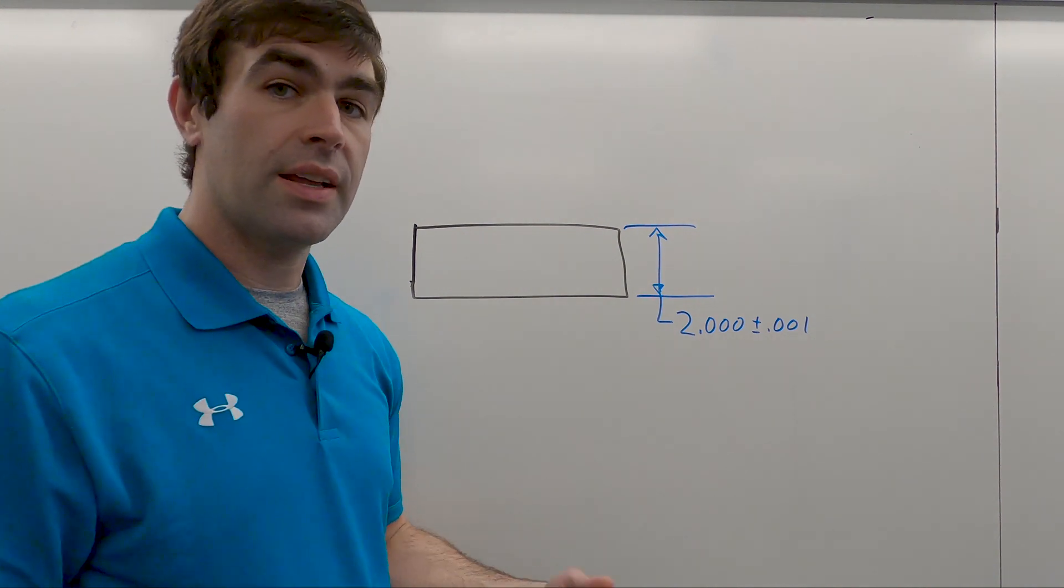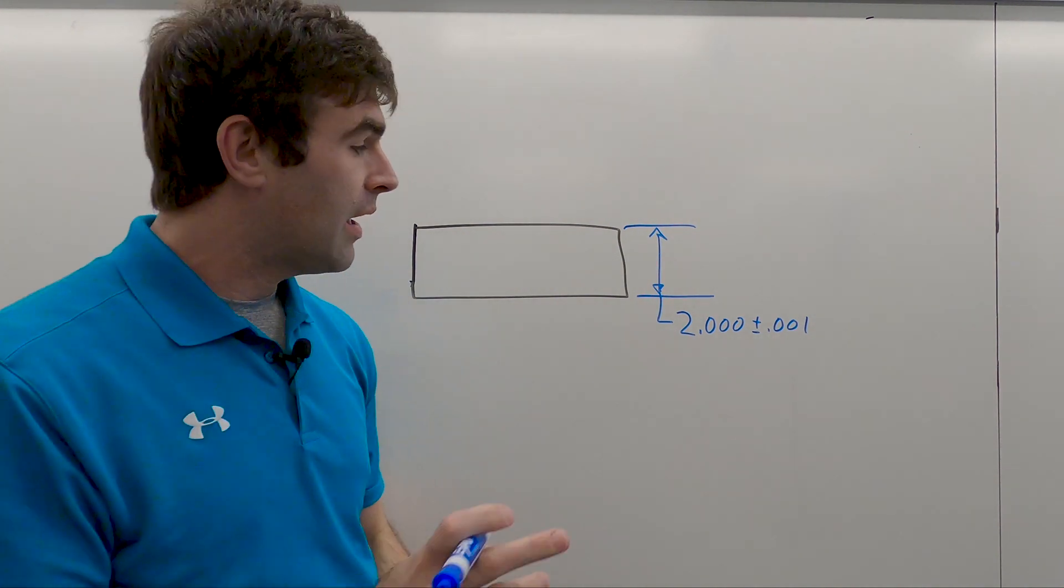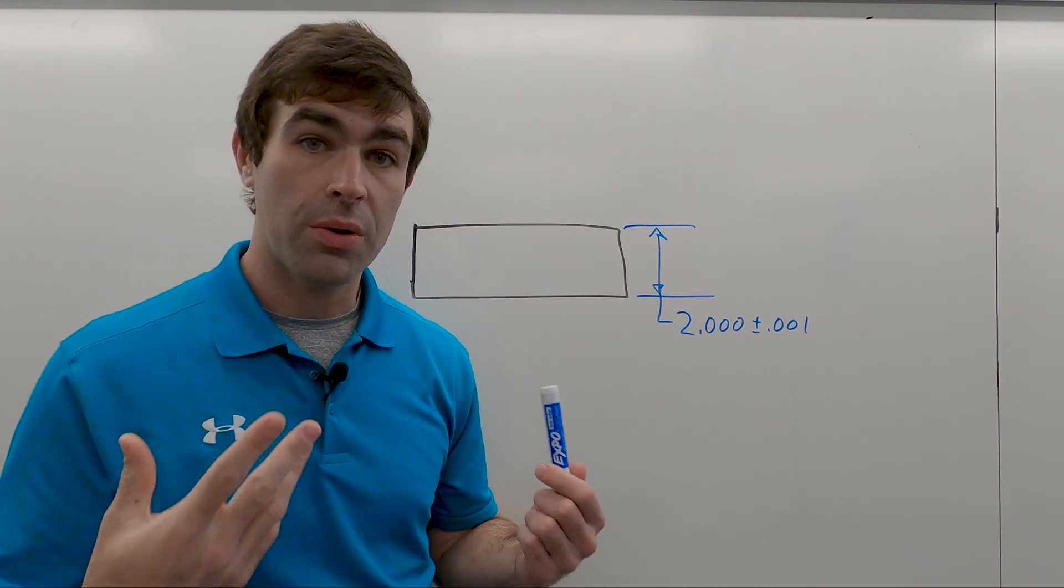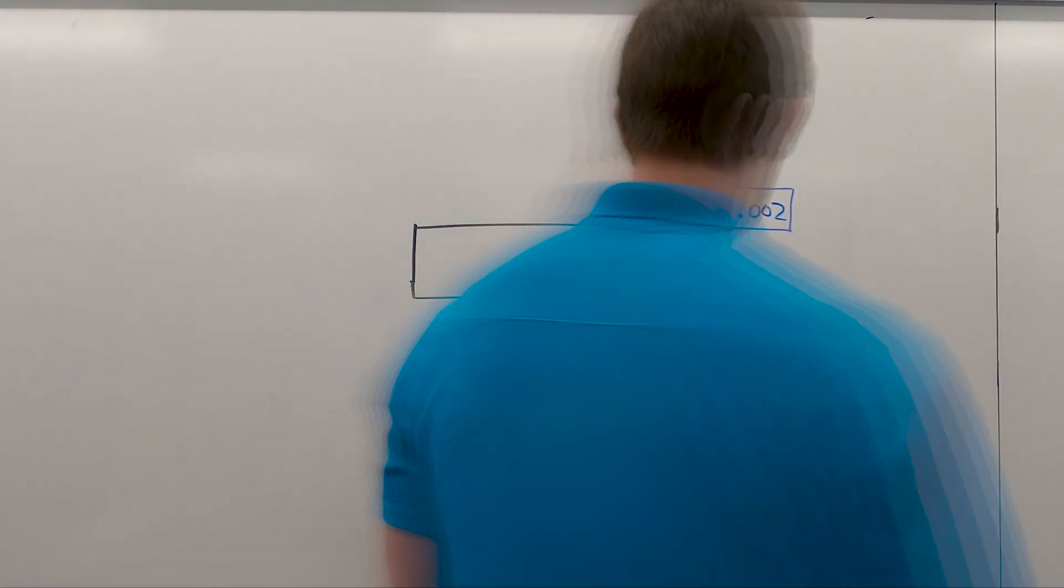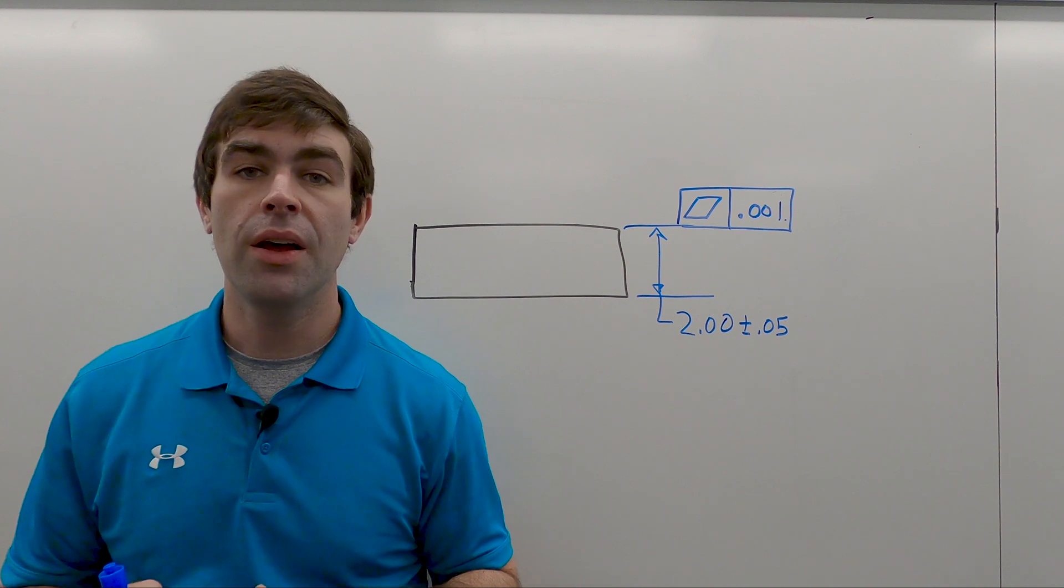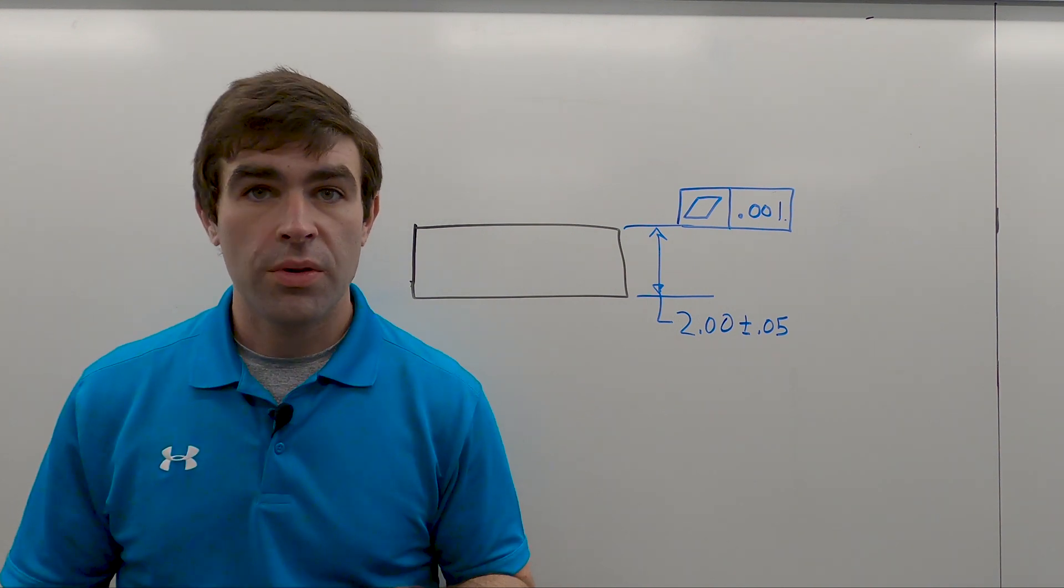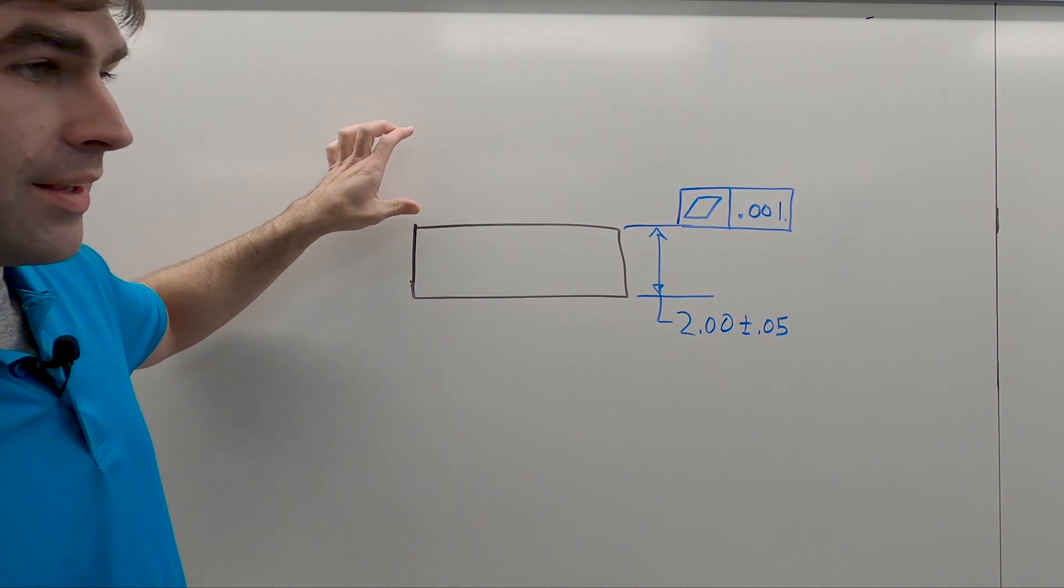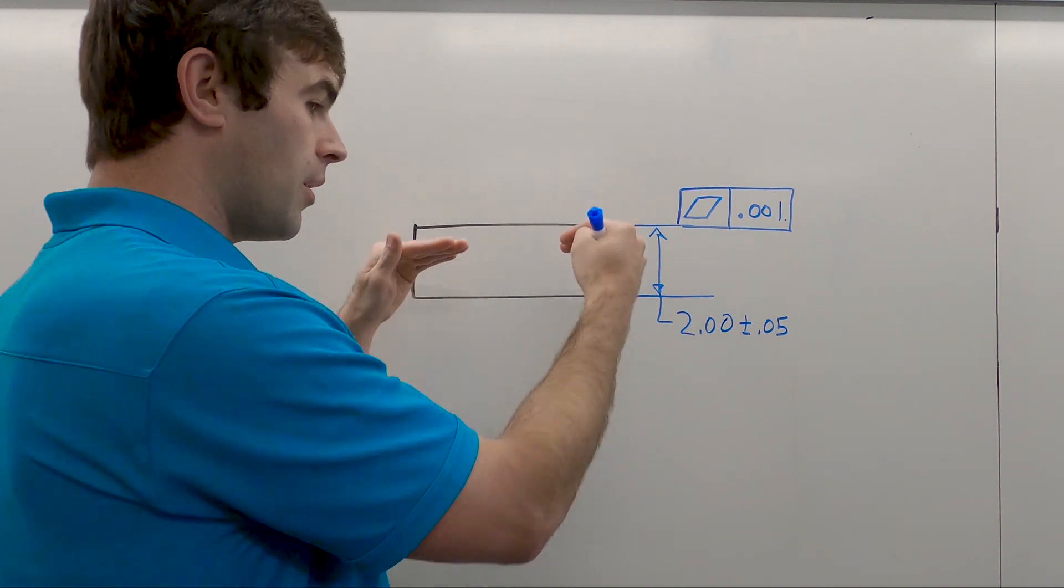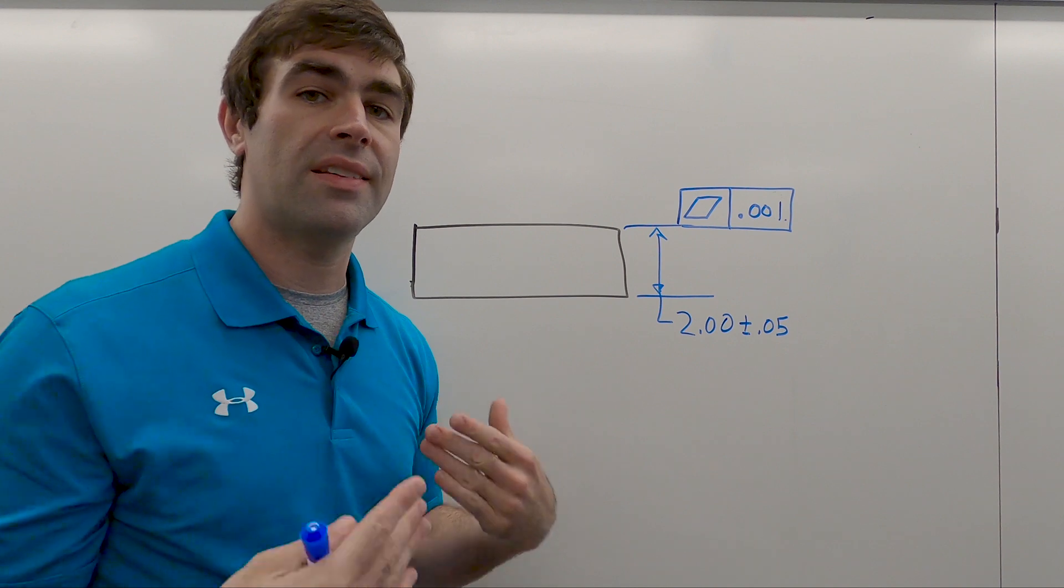So what we can do is apply a flatness tolerance to this surface to get that specific form that we want from the top, and then we can release this bottom surface to be whatever it needs to be. So let's do that. I made some changes—I added a flatness tolerance. The way this is checked: you'll take this surface and run an indicator over it.